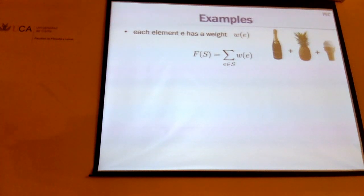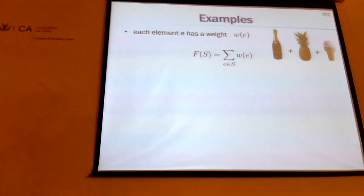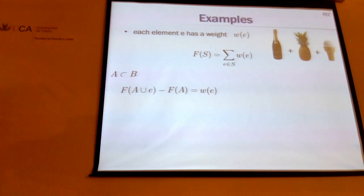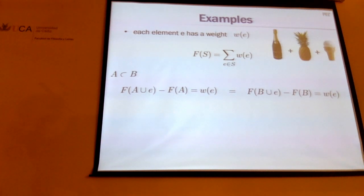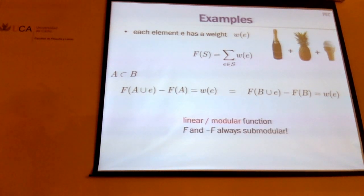Let's look at some examples of submodular functions. Maybe the simplest example is when all items have a weight or cost, and the cost of a set is just the sum of their weights — the typical example when you go to the supermarket. For the submodularity inequality: if I add item E to set A, my price increases by the cost of E; same if I add it to B. So the marginal gain is just the weight of that single element — I have equality, so the inequality holds. This is called a modular function — it's just a linear function. In fact, F plus or minus any modular function remains submodular.